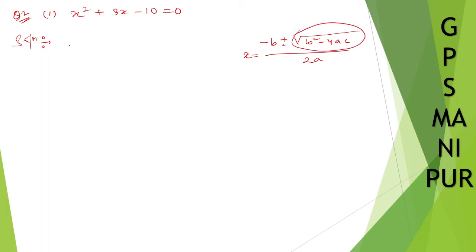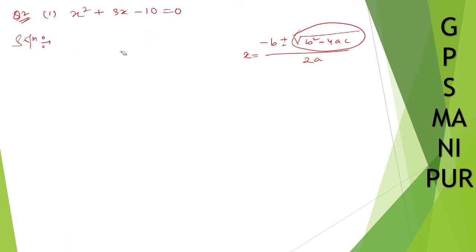Let us find out root over b squared minus 4ac. First let me write down the values of a, b, and c. Here a is equal to the coefficient before x squared, so a equals 1. b is the coefficient before x, that is 3. c is the constant term, that is minus 10.